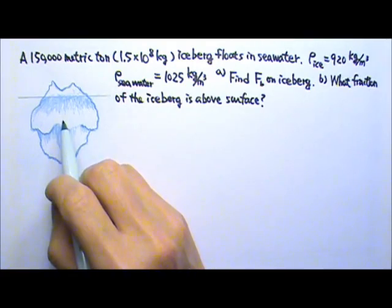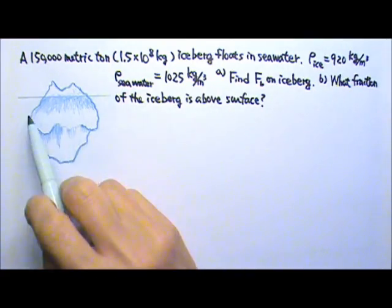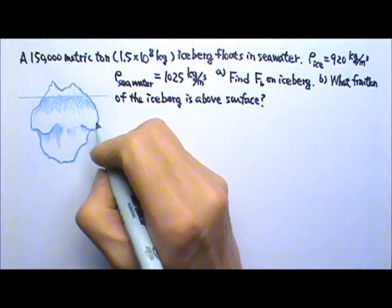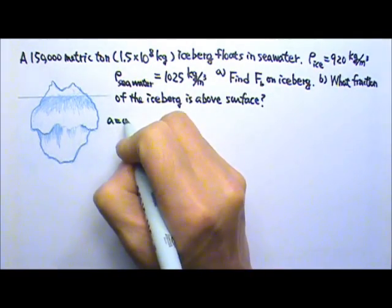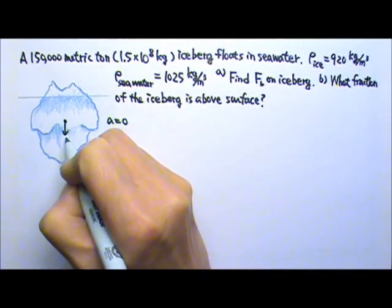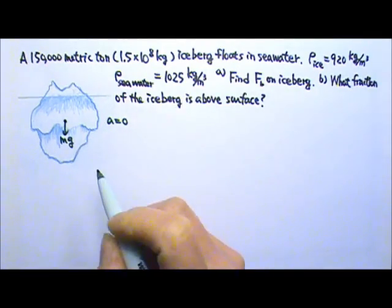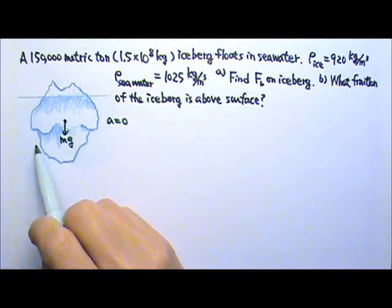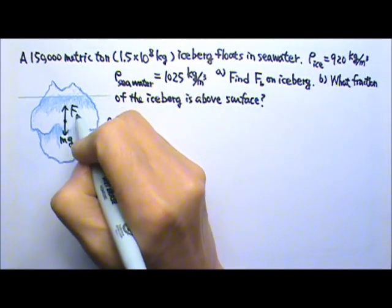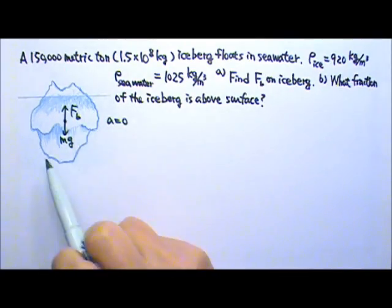Let's start from the force diagram. This iceberg is floating and staying at rest, so the acceleration is zero. If you draw the force diagram, you have mg of the iceberg, and the iceberg is touching the seawater which provides an upward buoyant force.